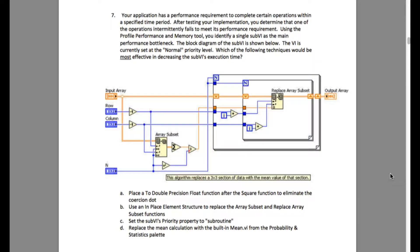set the sub-VI's priority property to subroutine. Which means, it will have the highest priority while it is going to execute. And when a sub-VI is set to subroutine, all the other codes outside that is not going to execute. Only the subroutine will execute.